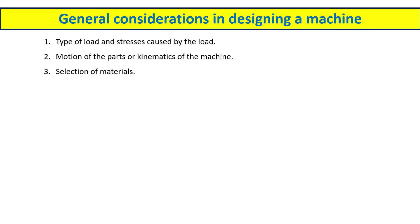If you are working on a new product development, the selection of material plays a very important role. For new product development, you need to follow reverse engineering — you need to check the complete part under load to determine whether the material is suitable for that product. You need to perform a number of iterations to confirm this.